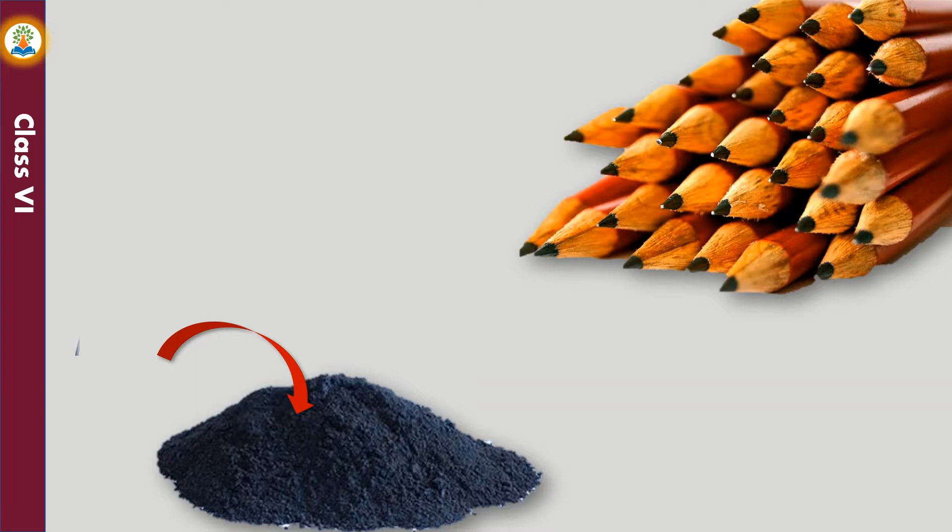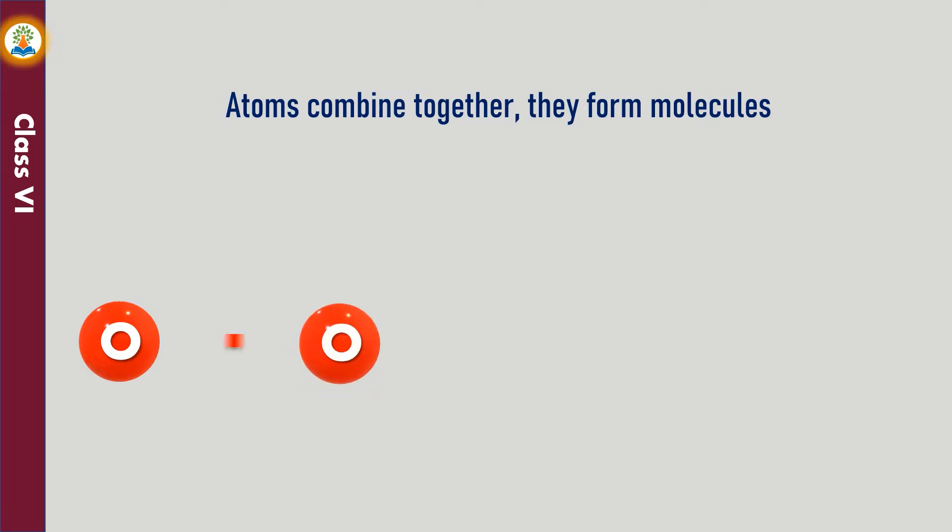So an atom is the smallest individual particle of matter. We cannot see an atom with naked eyes. Atoms combined together form molecules. An oxygen molecule is made of two atoms of oxygen.